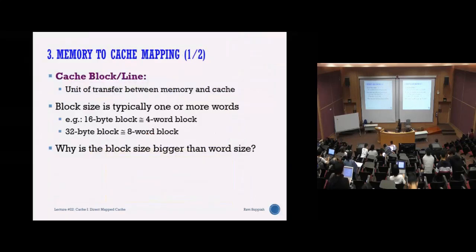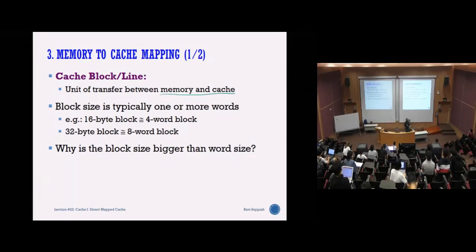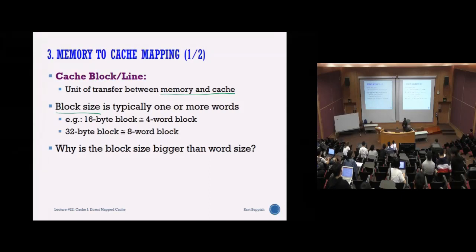Now, how to map memory to cache. There are a few terms to become familiar with. The first is cache block or cache line, which refers to the unit of transfer between memory and cache. Whenever there is a miss and you need to replace from main memory to cache, you must replace one cache block at a time. One block size is usually one or more words — for example, a 16-byte block is four words.